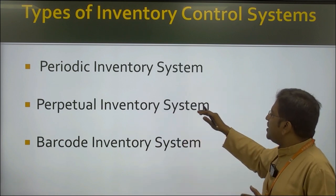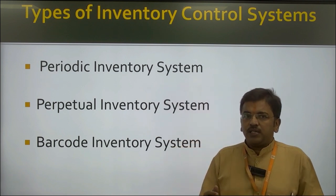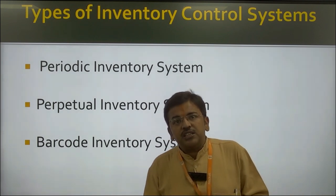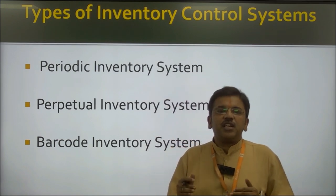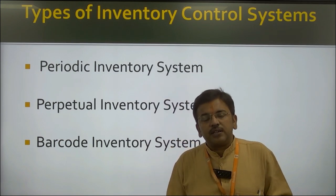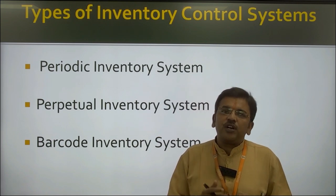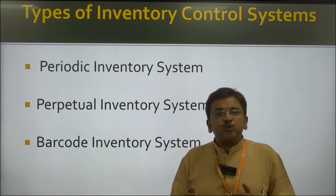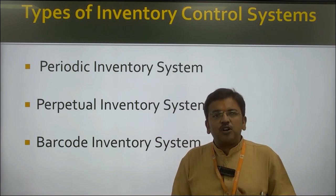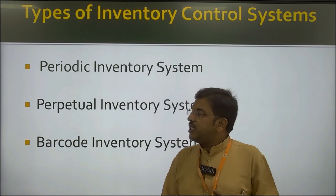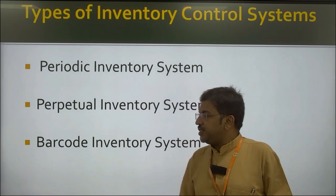The second is the perpetual inventory system. Perpetual inventory system means that whenever there is a reduction in the inventory, as soon as there is a downfall, we give the order and reorder the inventory so the process is maintained. An organization must not face a shortfall of inventory. So here the perpetual inventory system is taken into consideration.